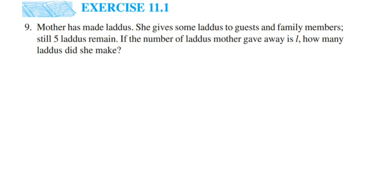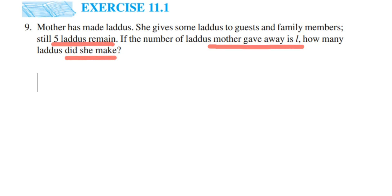So in the question, they have given that mother made some laddos and gave them to guests and family. Mother gave away l number of laddos and five laddos are still left. We have to find out how many laddos she made in total. She gave l number of laddos and five are still left, which means l plus five will be the answer.